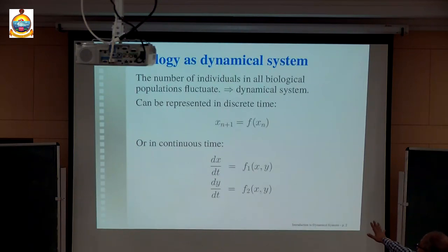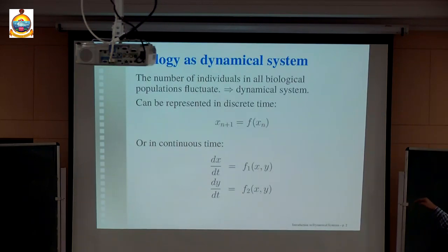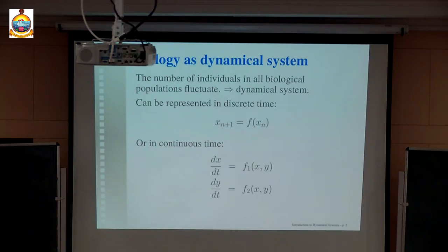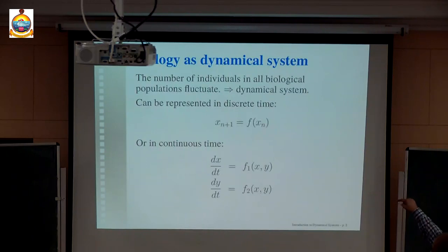In continuous time, the representation would be differential equations. Here I am representing a second-order system: the x variable changes as dx/dt = f(x, y), and similarly the y variable changes as dy/dt = g(x, y). We have to effectively understand the character of the dynamical system. The behavior will be represented by the functional forms f in case of a map, or f1, f2 in case of the differential equations.